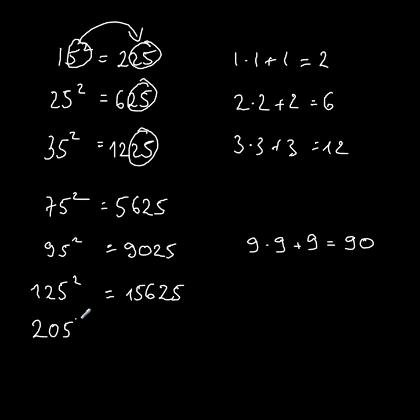205 square. That would be 20 times 20, 400, and plus 20, 420, and then 25.